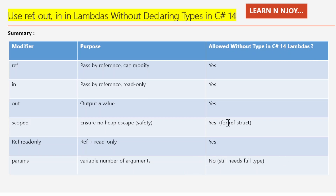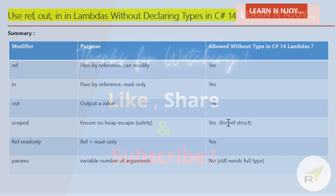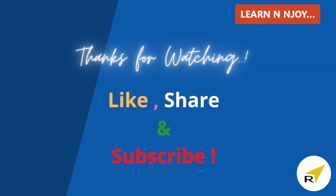That brings me to the end of today's session. To sum up: C# 14 lets you use lambda parameter modifiers like out and ref without needing to write full types, making our code cleaner and easier to read. But remember, params still needs the explicit type. That's all for this video. If you liked it, hit the like button, share it with your friends and colleagues, and subscribe to my channel if you haven't already. Thanks for watching, see you in the next video.